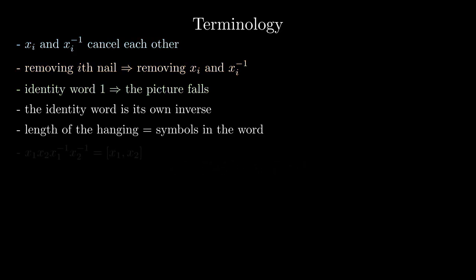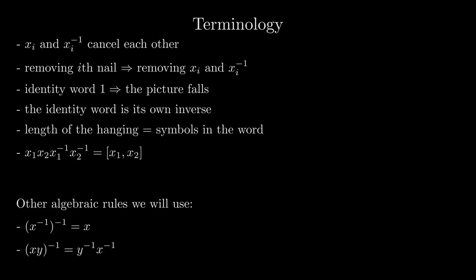In group theory, the word representing the answer for the two-nail puzzle is called the commutator of x sub 1 and x sub 2 and is written like shown. From now on, we will use this notation since it is a lot shorter. We will also use the algebraic rules added on the screen.